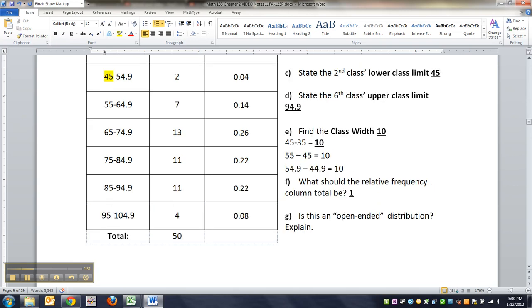Is this an open-ended distribution? No, because the last class has an upper limit. In other words, it's not 95 and up, is what I would say. And/or the first class has a lower limit.